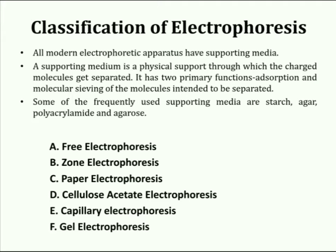Electrophoresis methods can be classified as free electrophoresis, zone electrophoresis, paper electrophoresis, cellulose acetate electrophoresis, capillary electrophoresis, and gel electrophoresis. In this lecture we will learn about paper and capillary electrophoresis.